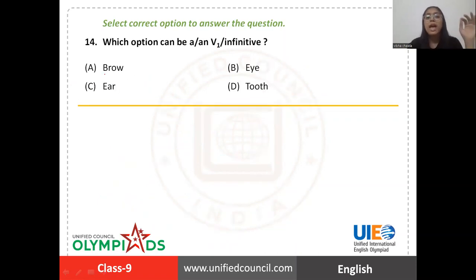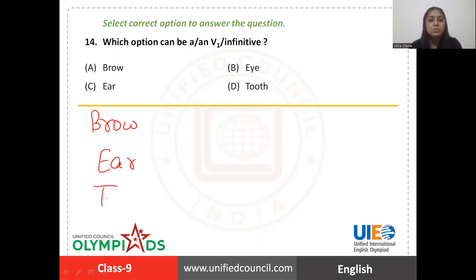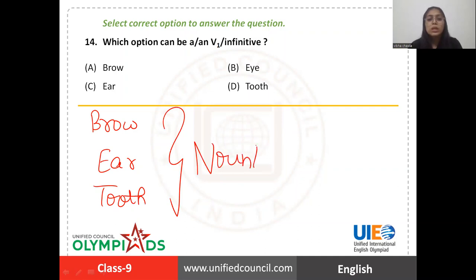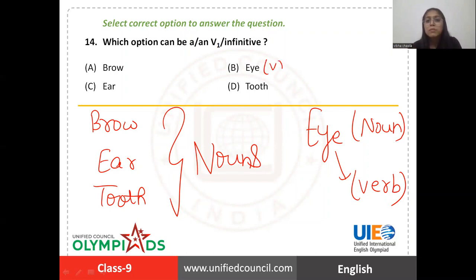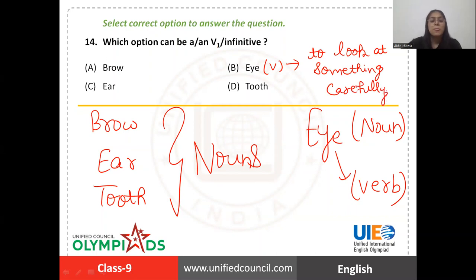Question number fourteen asks: which option can be an infinitive or the V1 (first form of a verb)? Options are brow, eye, ear, or tooth. Brow, ear, and tooth are only and only nouns. But 'eye' is a noun and can also act as a verb. As a verb, 'eye' means to look at something or somebody carefully, especially when you want something or you notice something is wrong. So 'eye' can be an infinitive — the right answer is option B.